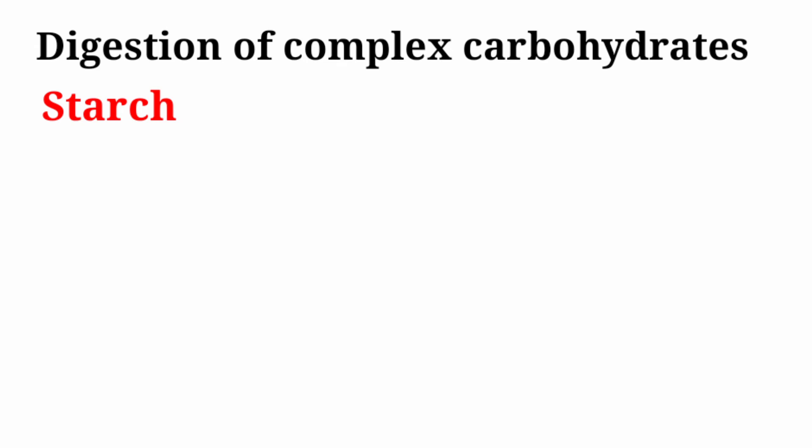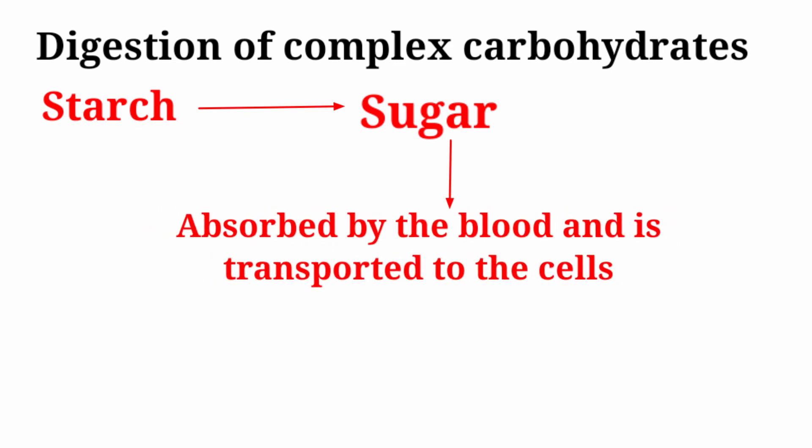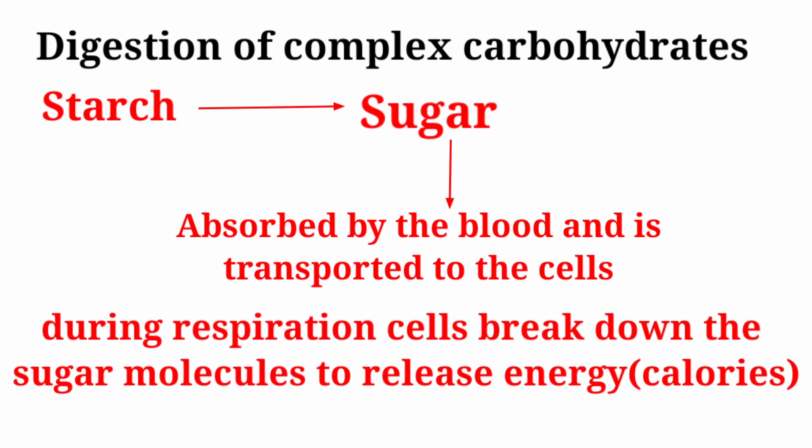Starch is converted into the form of sugar. This sugar is absorbed by the blood and transported to the cells. During respiration, cells break down the sugar molecule to release energy, known as calories. This energy is used by the cells to perform different functions.